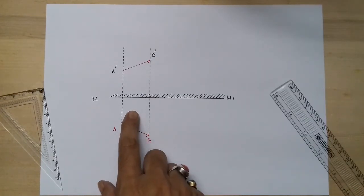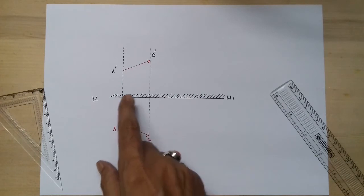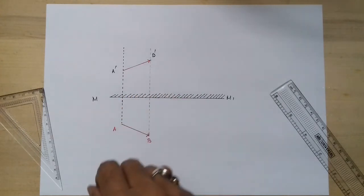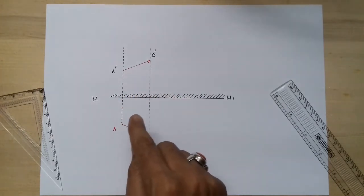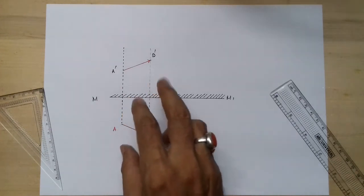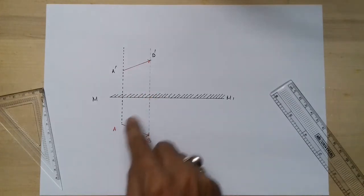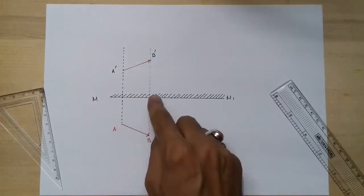We have drawn it on the basis of the concept we gathered from that video where we explained how to draw an image formed by a plane mirror of a point object. Here this is an extended object, but the same concept is to be applied here also. Now we will take two incident rays from this point, this end, and two incident rays from this end.